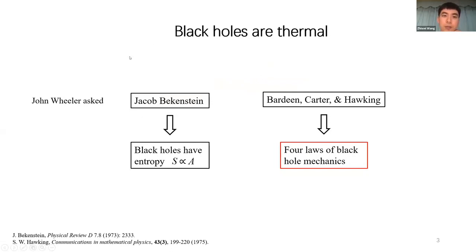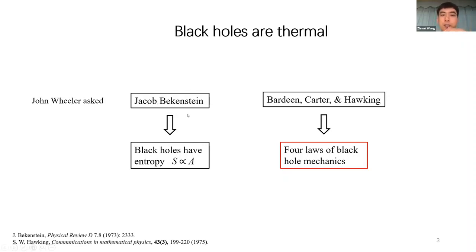People discovered black holes are thermal. The first to study this was maybe Bekenstein, when John Wheeler asked him about what would happen if you throw a cup of tea into a black hole. After some study, Bekenstein claimed that a black hole should have an entropy proportional to its horizon area. Then, shortly after, Bardeen, Carter, and Hawking found the four laws of black hole mechanics.